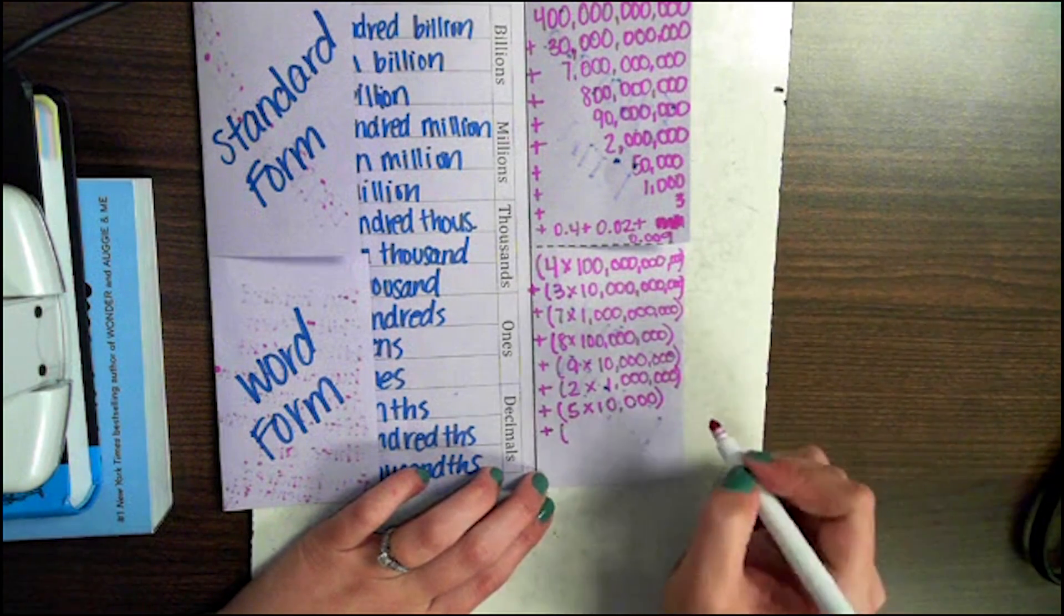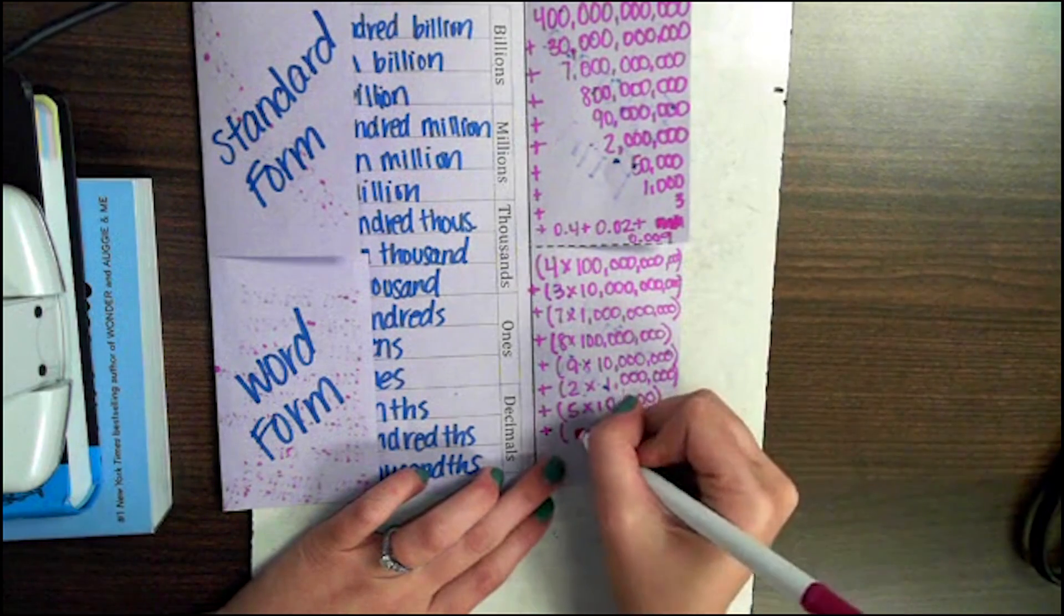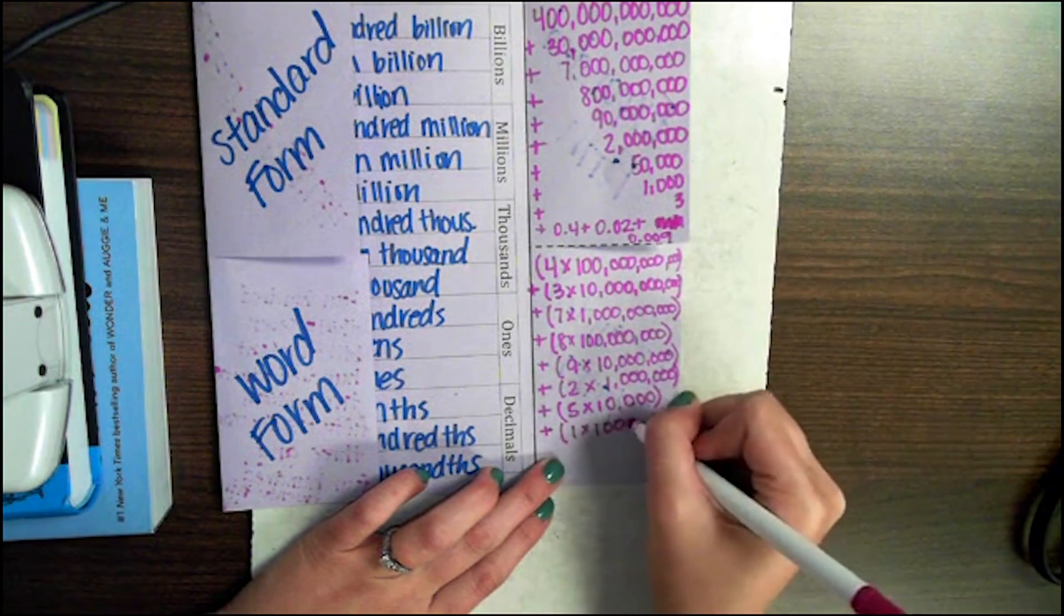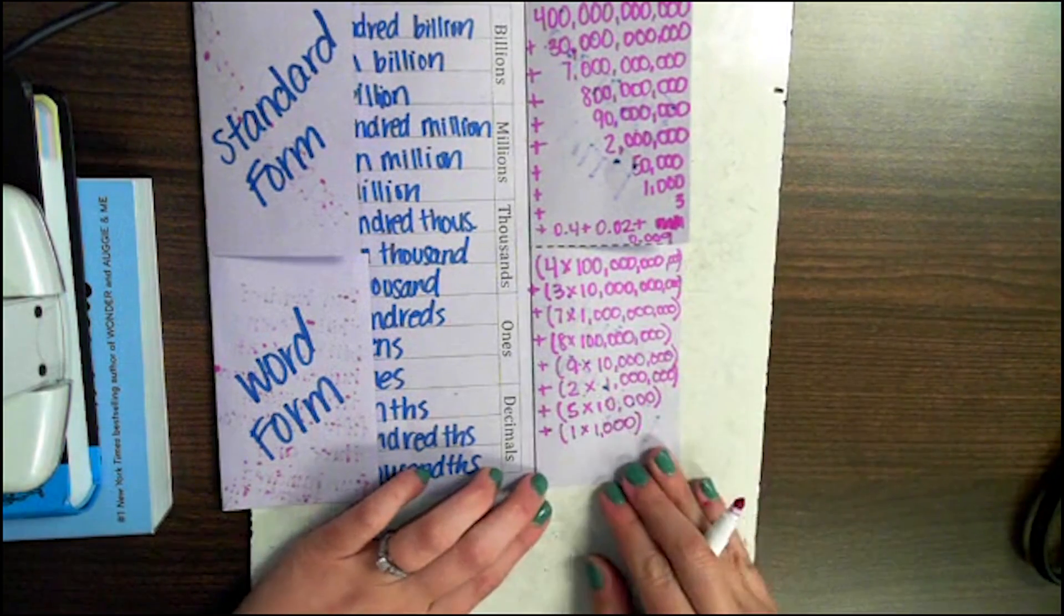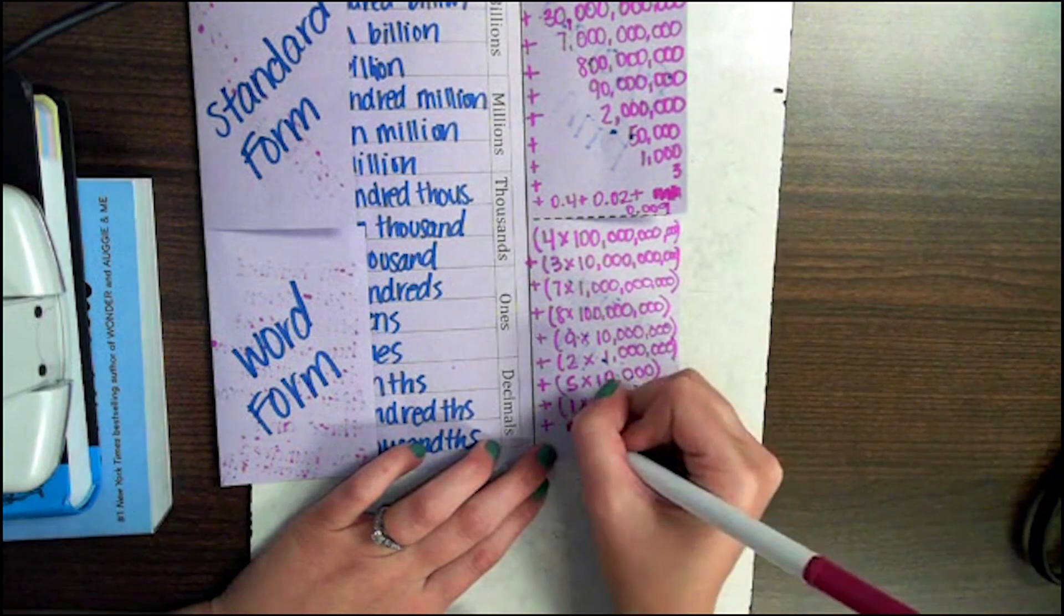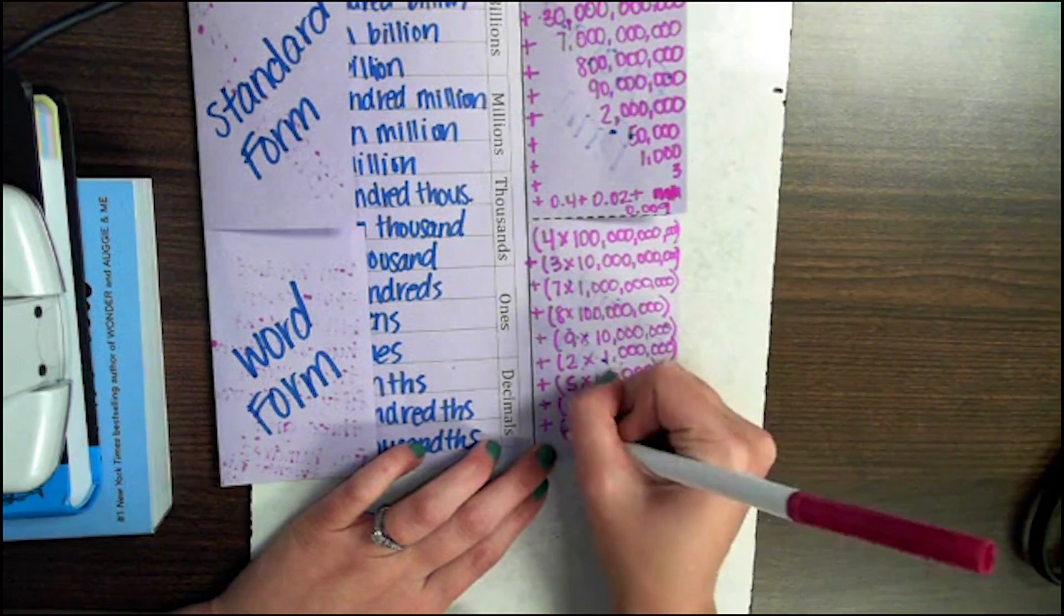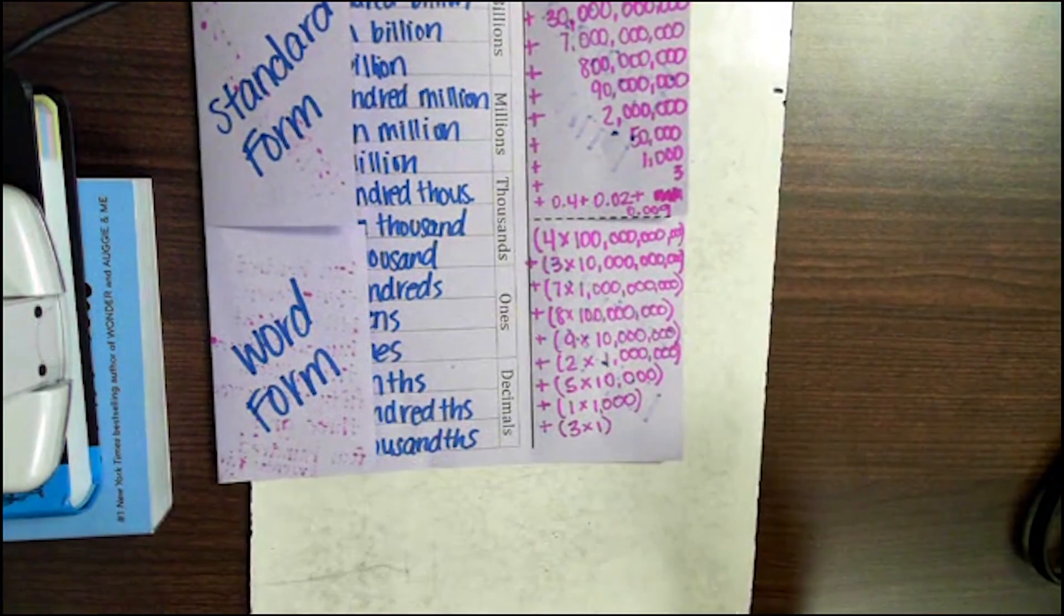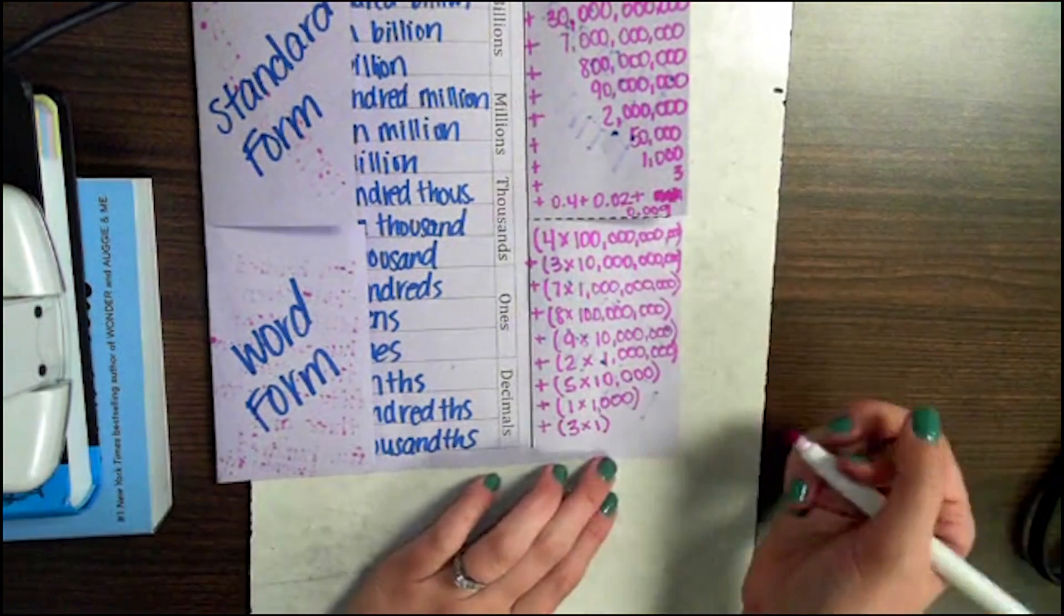The 1 is in the 1 thousands place value, but we're still going to do 1 times 1,000, even though it equals itself. We still want to expand it out. Plus the 3 is in the ones place, so we're just going to do 3 times 1.